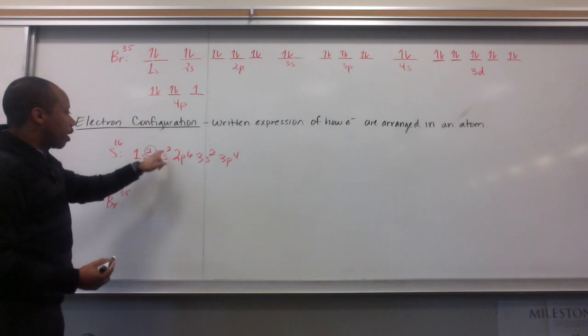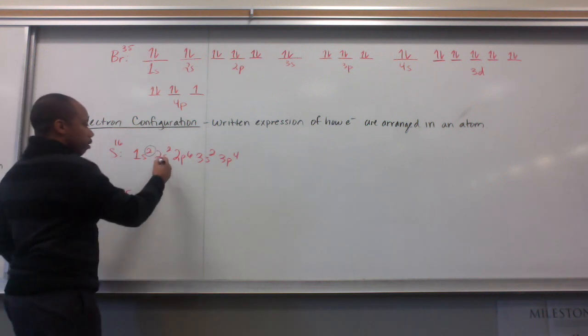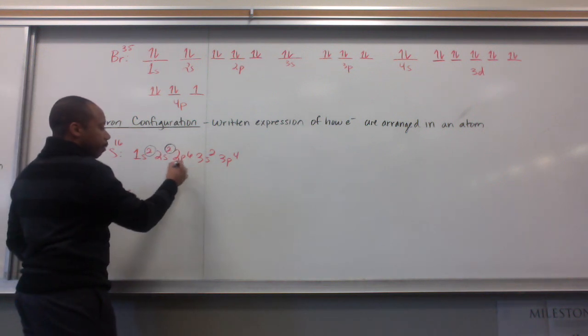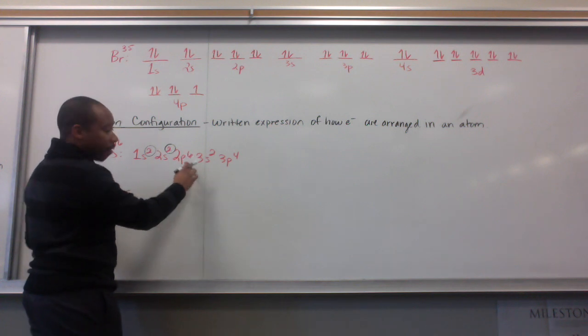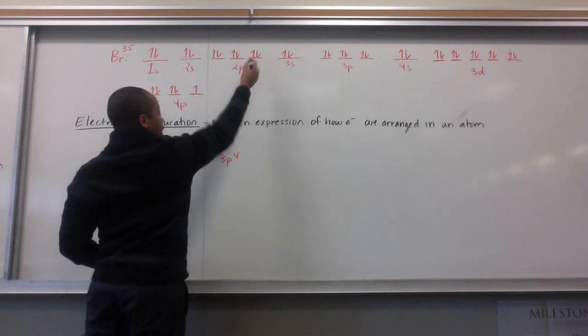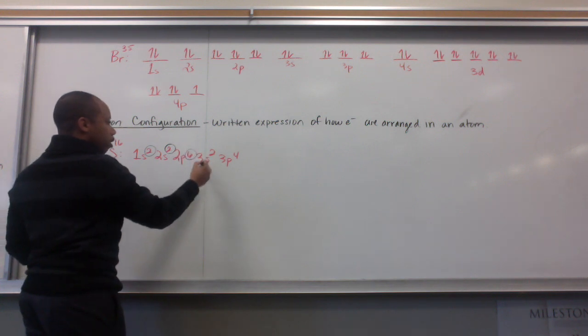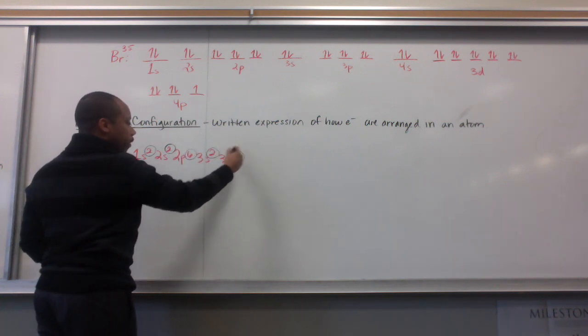So, 1s2, 2s2, and then my second energy level, p sub level, I have 6 total electrons, like we see here. 3s2, and then 3p4.